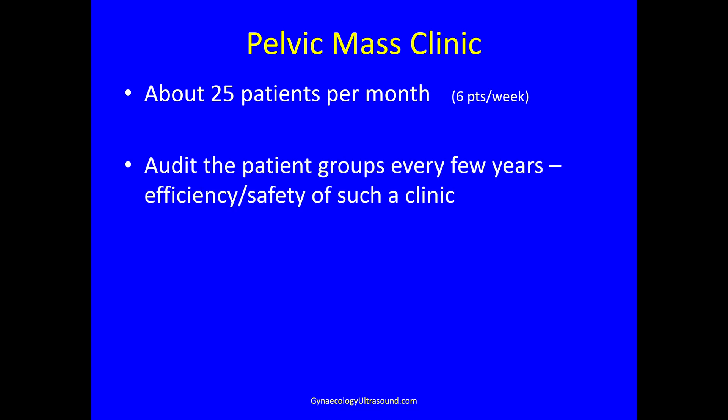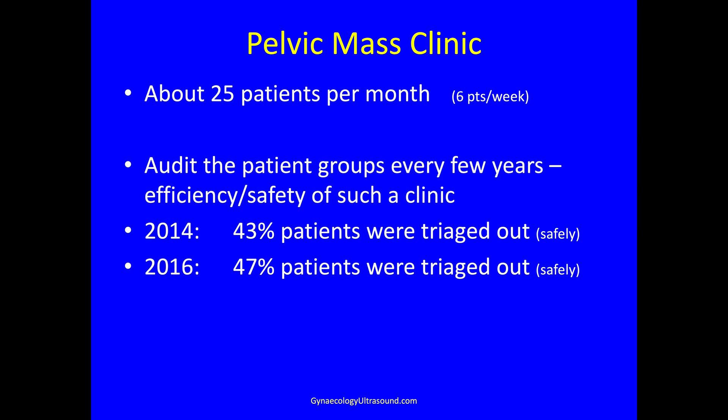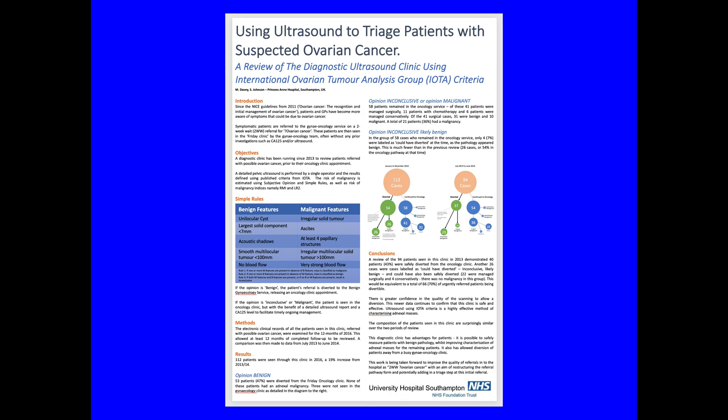I see about 25 patients a month and audit the safety and efficiency every few years. In 2014, about 43% of two-week wait patients were triaged safely out to benign gynaecology. By 2016 it was 47%, and currently I triage out at least half of all two-week wait ovarian patients to benign gynaecology, though referral quality has declined somewhat.